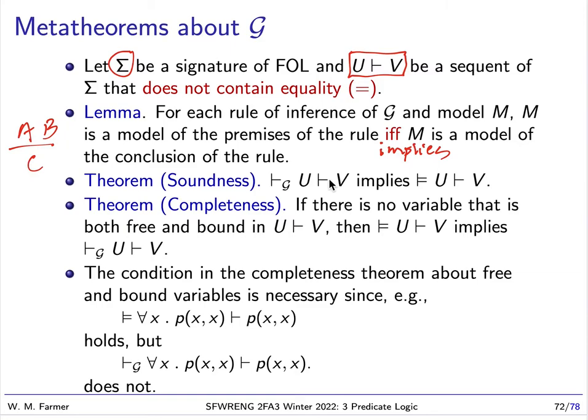But in this case, we have if and only if. We have truth flowing both ways for our rules of inference. If we have a model of A and B, then that will be a model of C, and if we have a model of C, it will be a model of A and B.